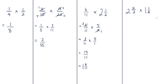For the final question we have two mixed numbers, so we convert both to improper fractions. For the first: take the whole number and multiply by the denominator — two times three is six — then add the numerator two, giving eight over three. For the second: one times four is four, plus one is five, so it's five over four.